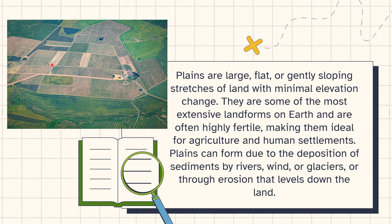That is why, not only in agriculture but for settlement, it is a requirement of human life to have flat land. Plains are basically large areas with gently sloping. They are flat lands but they just have a gentle slope — a very minimum elevation.